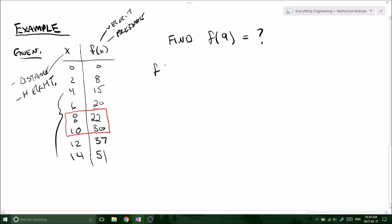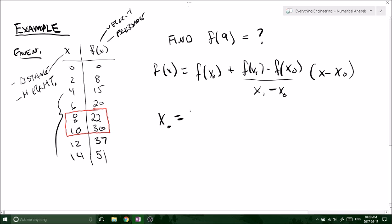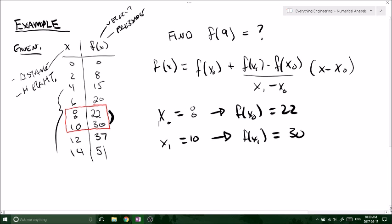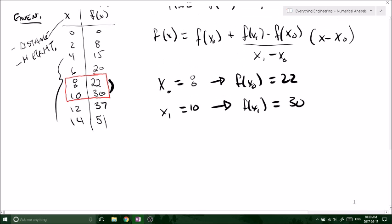Back to the formula that we just developed. Remember, we just came out with this formula. Now we need to plug in some values. We can say in this case, our x naught is equal to 8, giving our f of x naught equal to 22. And x1 equals 10, giving our f of x1 equal to 30. We just pulled those right off the chart, right from the data points we were given. Now literally all you got to do is plug it into the formula. It's that simple.